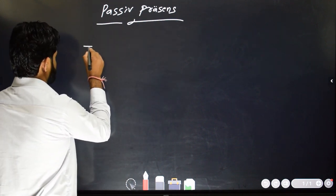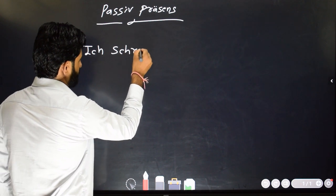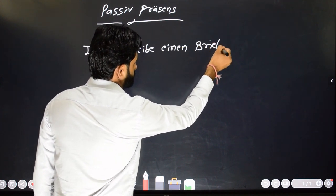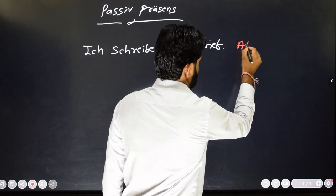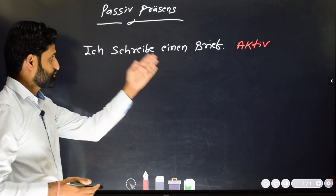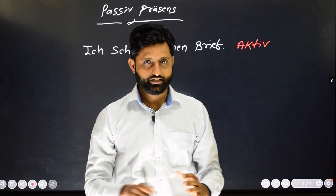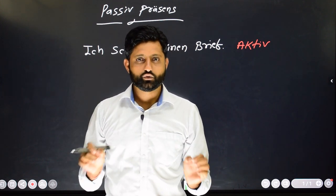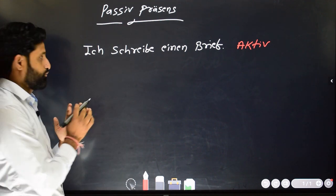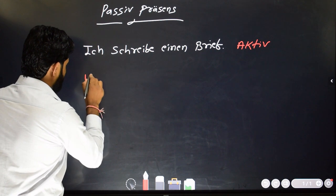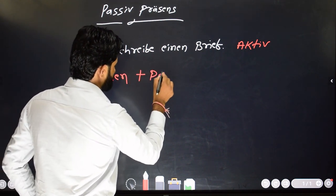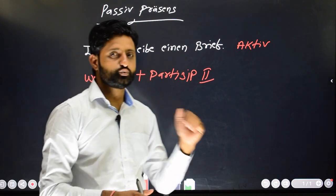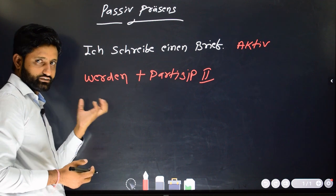Let me write the active sentence: 'Ich schreibe einen Brief.' So this is an active sentence. If you want to convert this sentence into a passive sentence, what we need to do is bring the object to the place of the subject and use the verb 'werden' in a conjugated form. So passive voice will be: werden (conjugated) plus the Partizip II of the verb which was used in the active sentence.